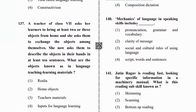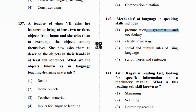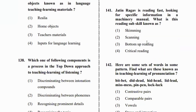Next question on mechanics of language and speaking skills. If you look at English mechanics — how it works — it includes pronunciation, how you pronounce any word, grammar and vocabulary, social culture rules, and script words and sentences. These are the components of language mechanics.